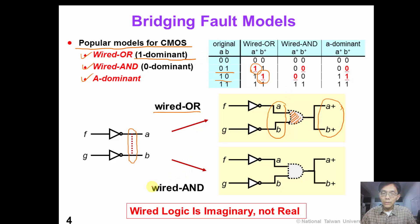Similarly, we can also model this as a wire-AND model. In this case, we insert an imaginary wire-AND logic. So the output A+ and B+ would be 0 if the original input is 0 and 1, or 0 if the original input is 1 and 0. So this is why the wire-AND model is also called a 0-dominant fault model.